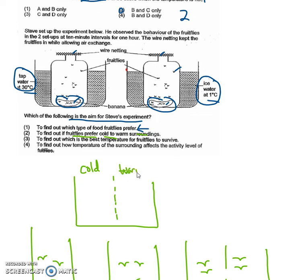You have some fruit flies, and you see which place they belong. If there are more fruit flies at the cold side then they prefer cold, if there are more fruit flies at the warm side then they prefer warm.